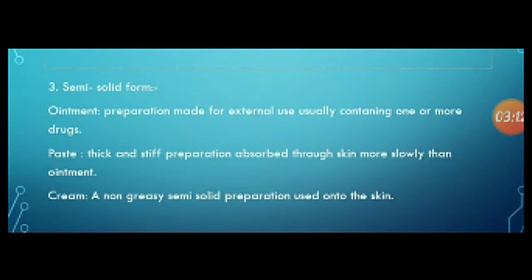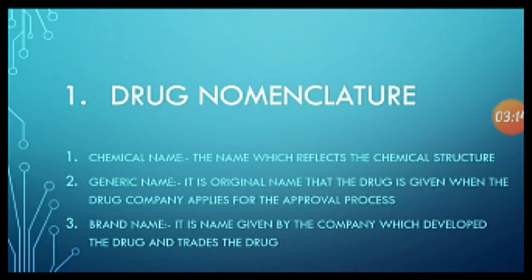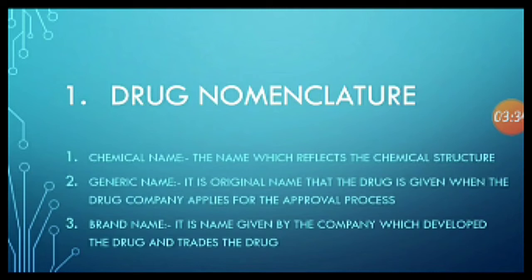Now we will learn about drug nomenclature, which contains three names. First is the chemical name — the name which reflects the chemical structure. Second is the generic name — it is the original name that a drug is given by the drug company during the approval process. Third is the brand name — the name given by the company which develops and trades the drug.